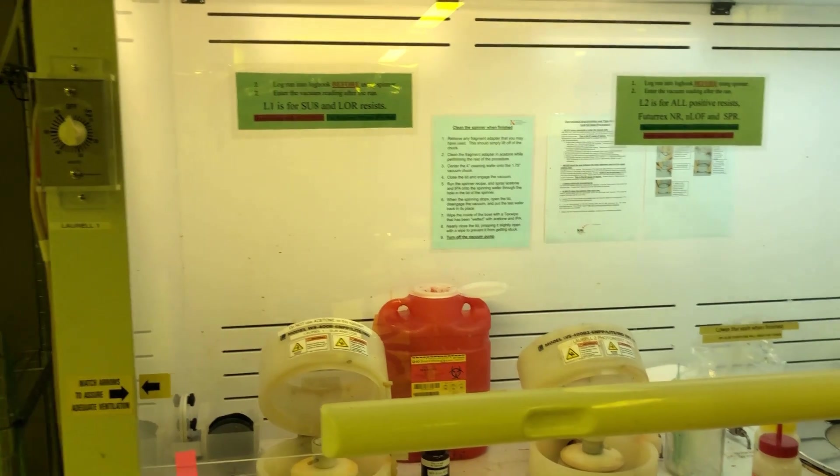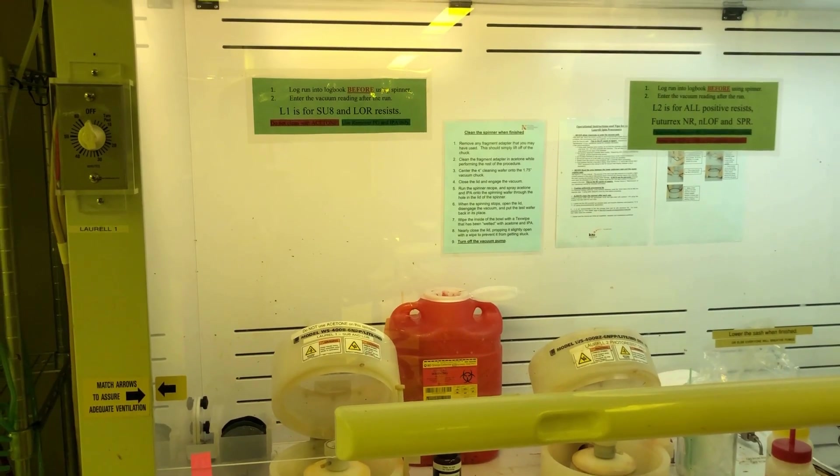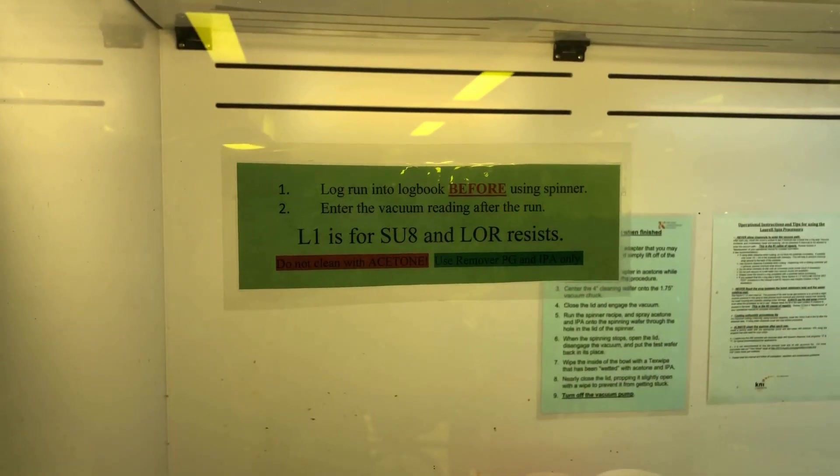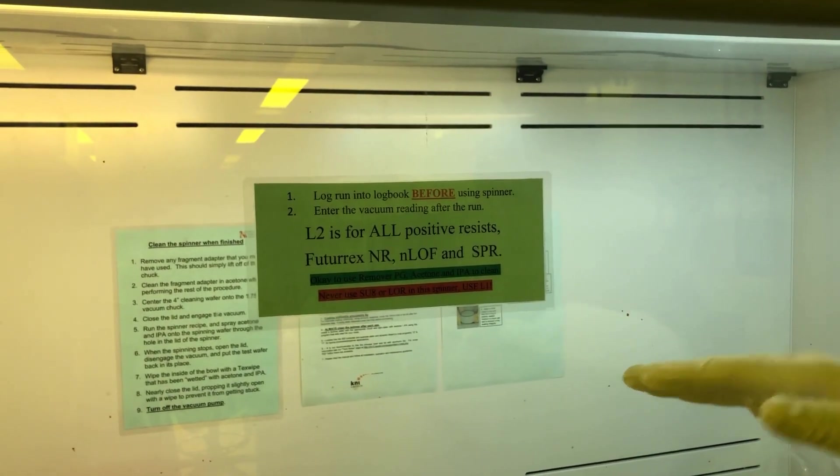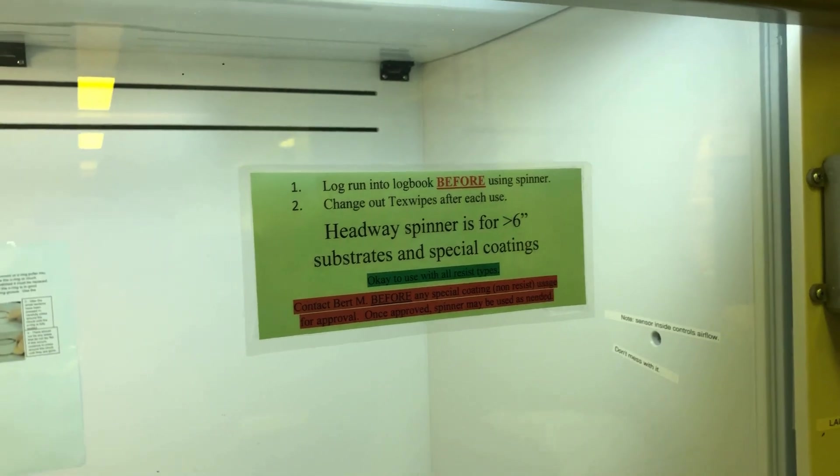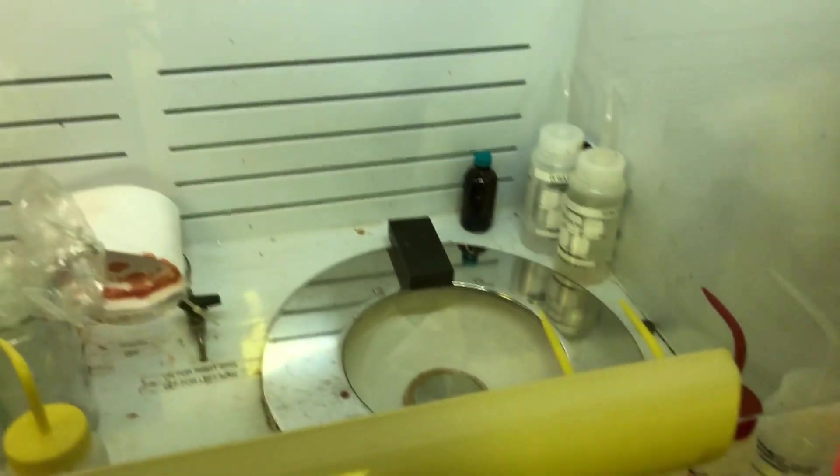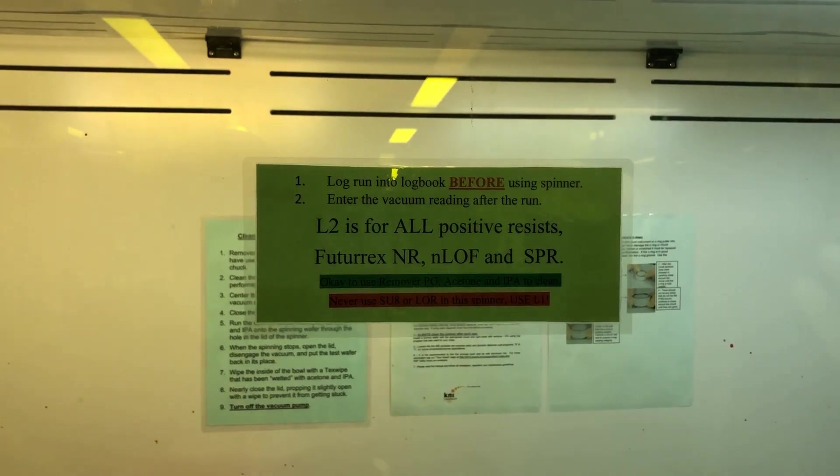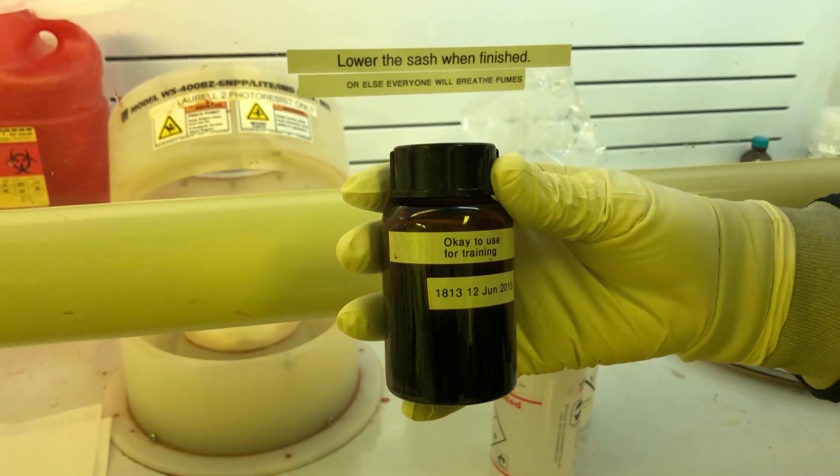the first thing you're going to want to do is select the correct spinner for your coating. The first spinner, Laurel 1, is for SU-8 and lift-off resist. Laurel 2 is for our positive resist and other standard processing resist. We have our Headway spinner for wafers larger than 6 inches and special coatings that do not go in Laurel 1 or 2. For this demo we're using Laurel 2 with positive tone resist S1813.